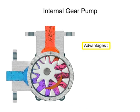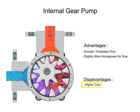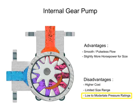A stationary crescent-shaped divider separates the intake and discharge portions of the fluid. Advantages of internal gear pumps are a smooth and almost pulseless flow and slightly more horsepower for its size. Disadvantages are its higher cost, limited size range, low to moderate pressure ratings, and few sources of manufacture.